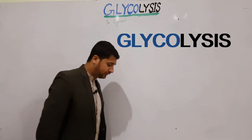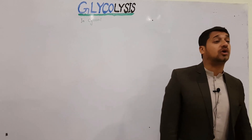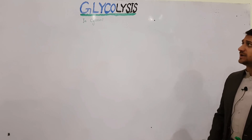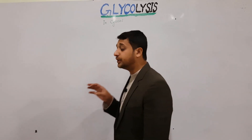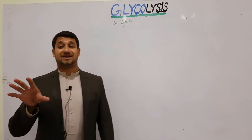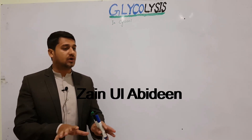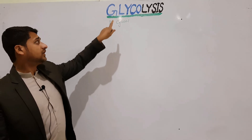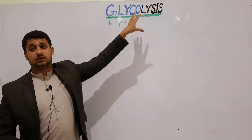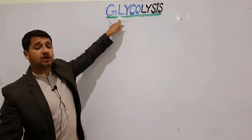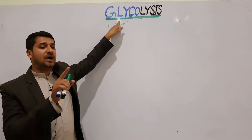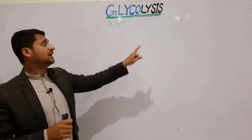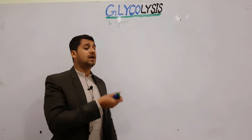Glycolysis is the first step of respiration, which is common in both aerobic and anaerobic respiration. It is the most important step because the glucose molecule is broken down into two pyruvic acid — a six-carbon molecule broken into two three-carbon molecules. The word glycolysis is a Greek word: 'glyco' means glucose (carbohydrate in biochemistry), and 'lysis' means splitting or breakdown.